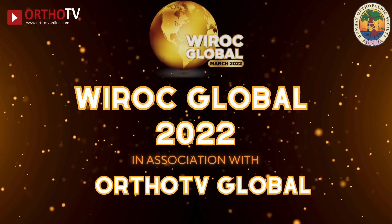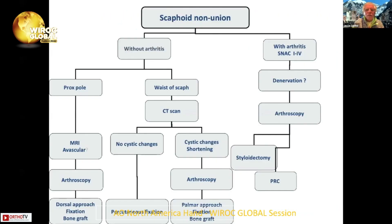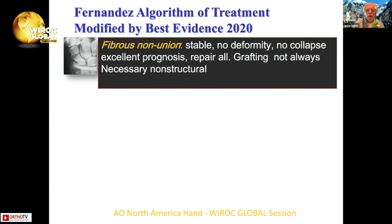Looking at this diagrammatic chart of scaphoid nonunion, we may not always be talking about the same entity. There may be a proximal pole, waist fractures with or without arthritis, or fracture nonunions with problematic arthritis or carpal instability. Diego Fernandez in Switzerland came up with a nice approach to think about these things. One key consideration is a fibrous nonunion — when it's stable without deformity or collapse, these have an excellent prognosis and grafting is not always necessary.